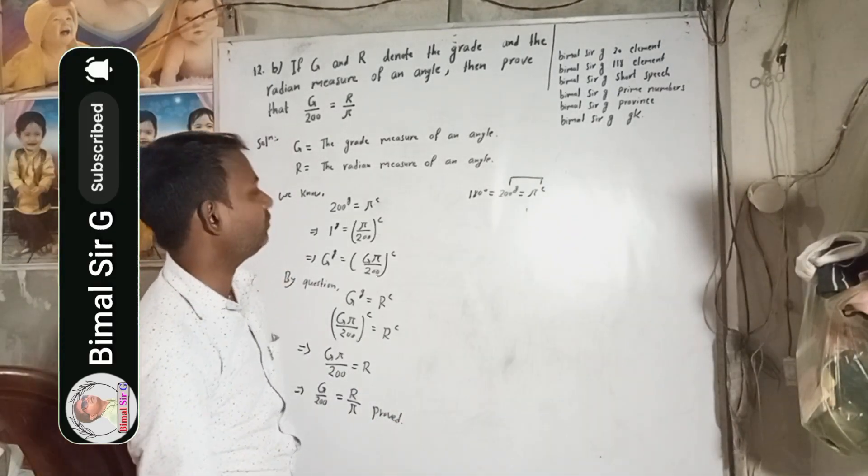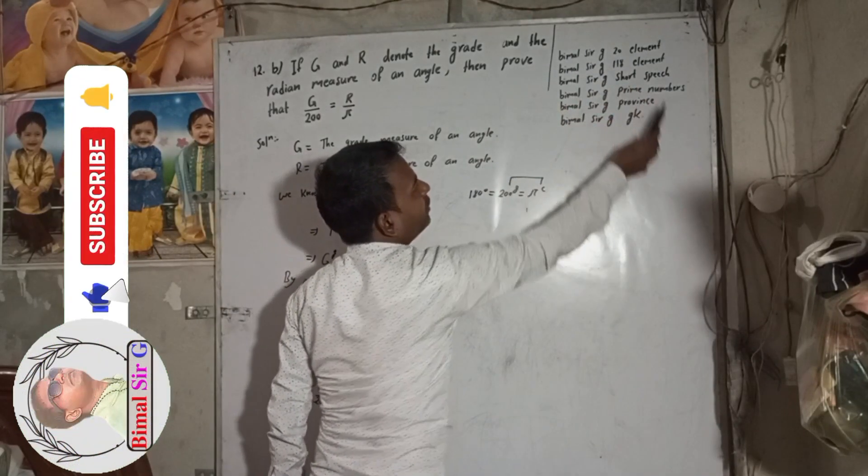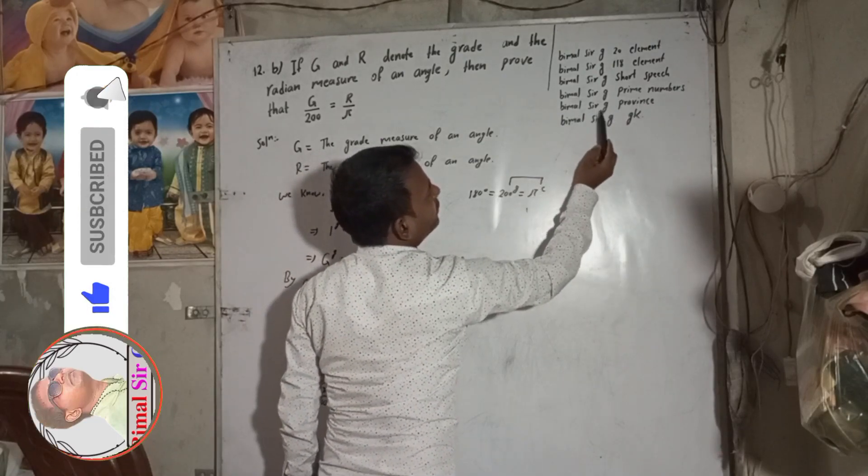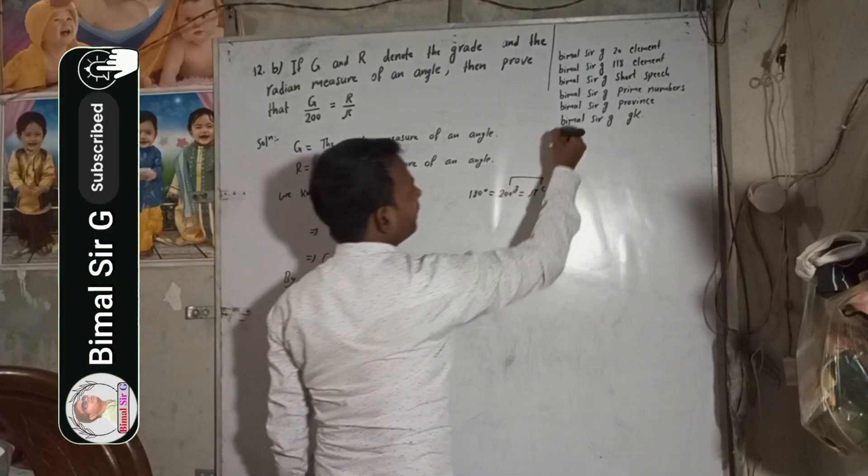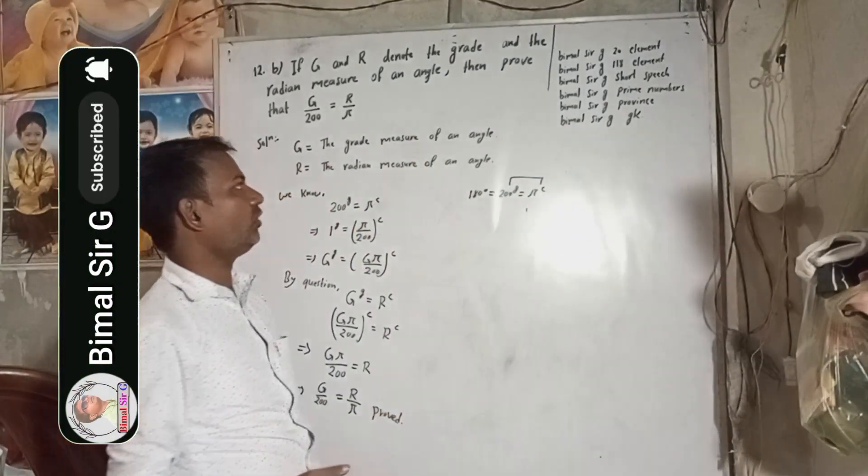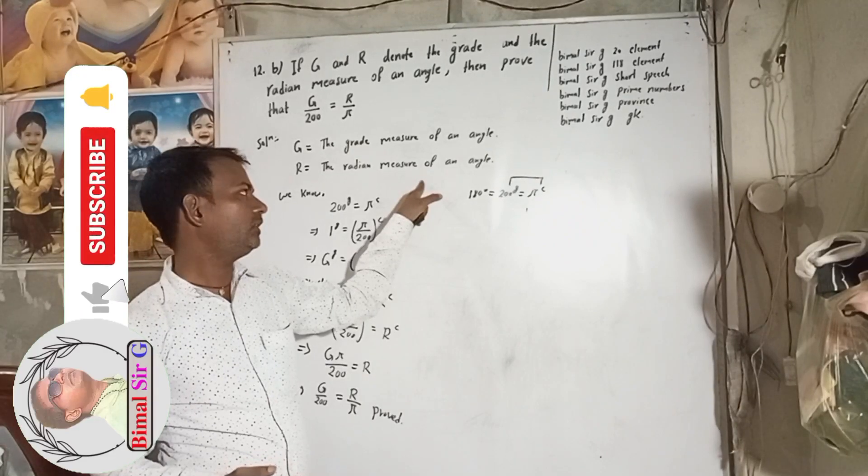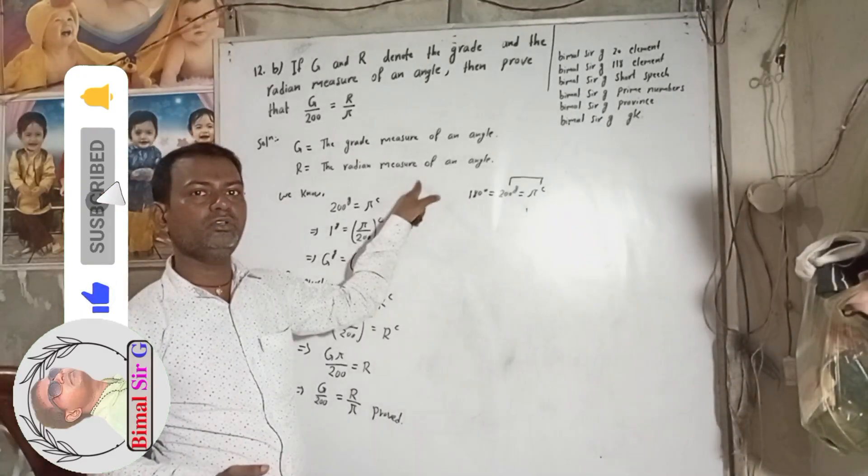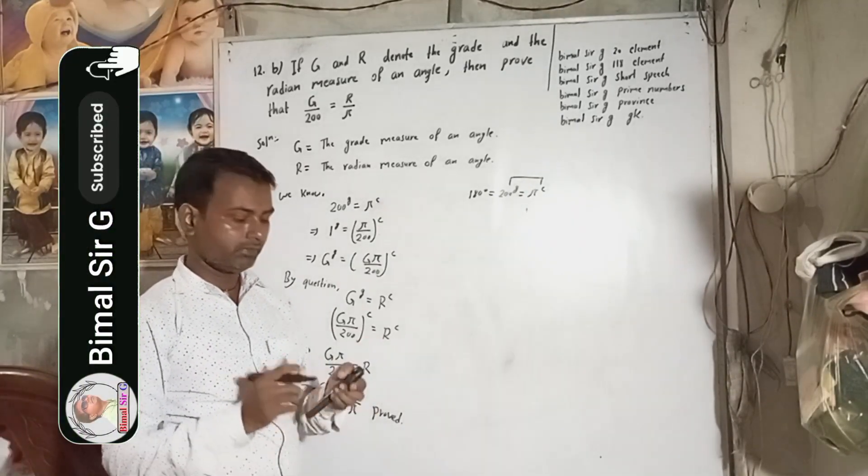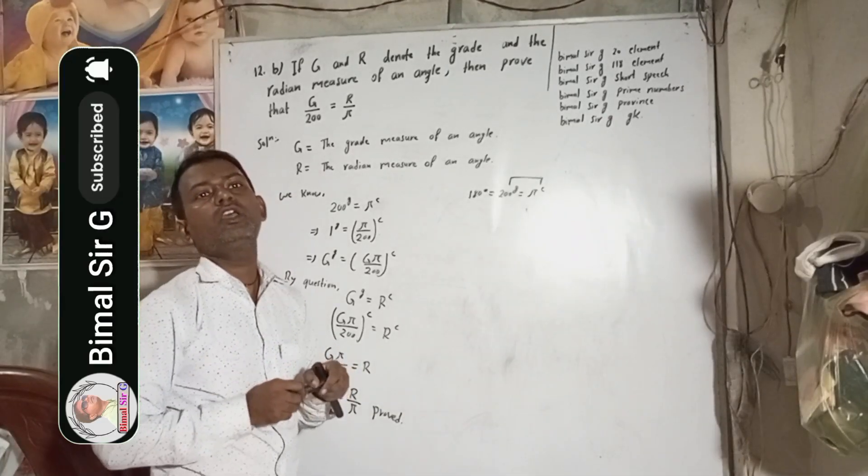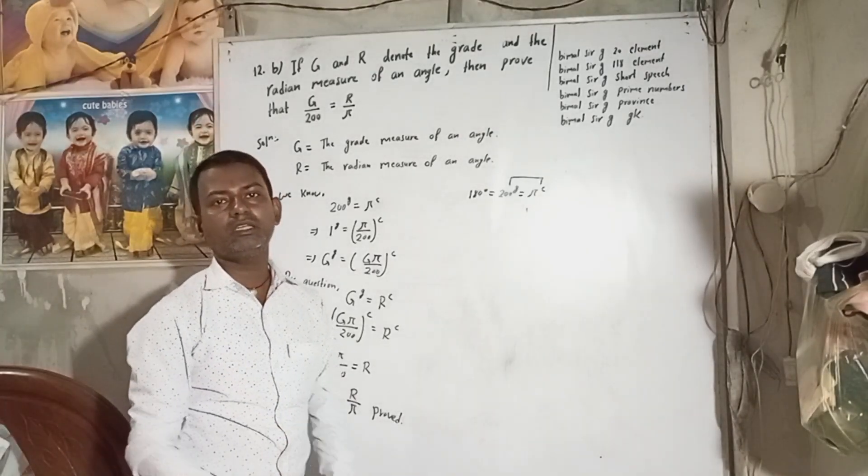In Bimalsarji YouTube channel, you can find Bimalsarji 20 elements, Bimalsarji 118 elements, Bimalsarji short speech, Bimalsarji prime numbers, Bimalsarji province, Bimalsarji GK. Subscribe to Bimalsarji YouTube channel so that you can get the updates of newly uploaded videos. See you in the next videos. Radhe Radhe. Jai Shri Krishna.